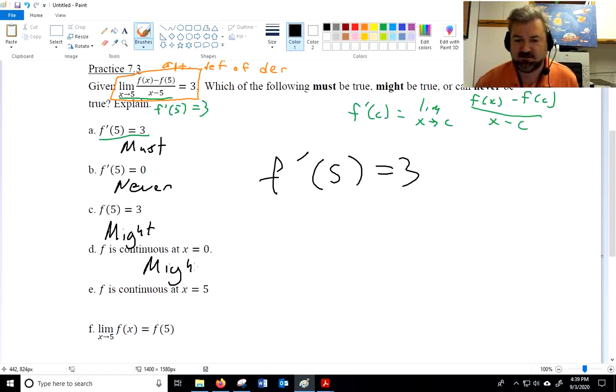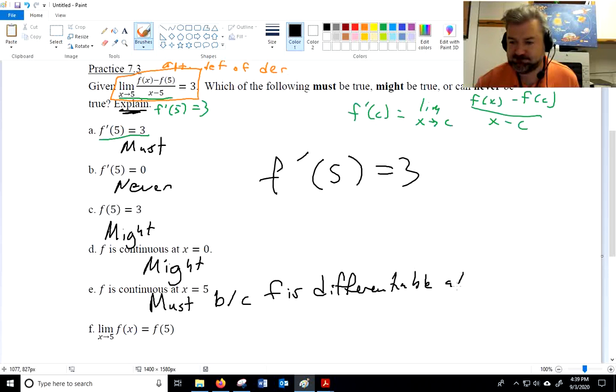Maybe it's got an asymptote there. f is continuous at x equals 5. Well, can I say that's true? Yes. How do I know? You were supposed to be explaining, and I've been explaining out loud, you should be writing. Must. Because why? Because f is differentiable there. How do I know it's differentiable at x equals 5? How do I know that f is differentiable there? Because the derivative at 5 is a real number. And to be differentiable, you must be continuous and smooth.